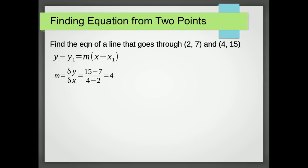So I'm choosing to do the second point minus the first point, so it's 15 minus 7 over 4 minus 2. It's really important that we're consistent in that, otherwise we can end up the wrong sign. So that's 8 over 2, which is 4.